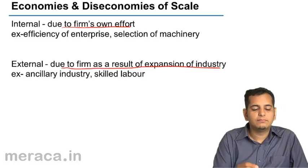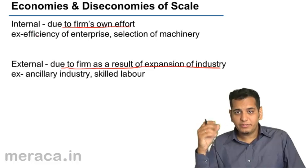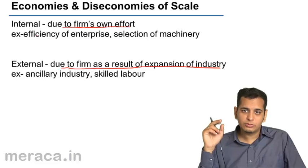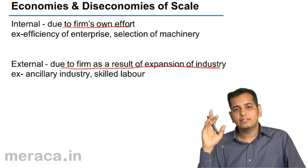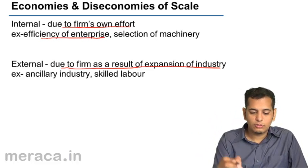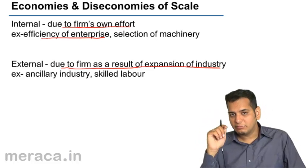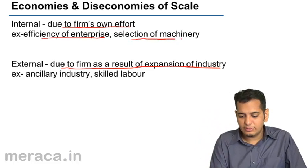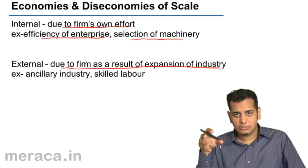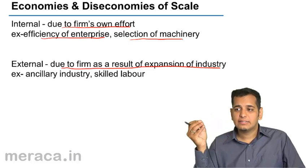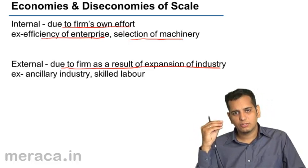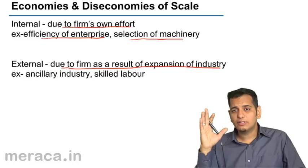If the firm is achieving economies of scale due to an increase in the efficiency of its labour or due to a selection of better machinery, these are all factors which relate only to that firm. Thus, these factors are called internal factors, and economies arising from these factors are called internal economies of scale.